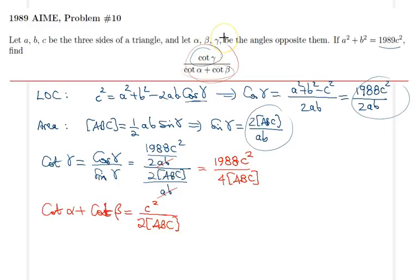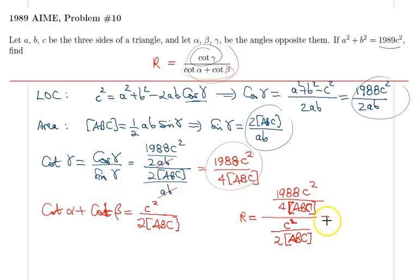Finally I just need that ratio. Let's call this ratio R. So R equals the numerator, 1988c²/(4·Area[ABC]), divided by the denominator, c²/(2·Area[ABC]). After making the necessary cancellations, the Area[ABC] terms cancel, the c² terms cancel, and the final result is 994. That would be the answer to this problem, and we are done.